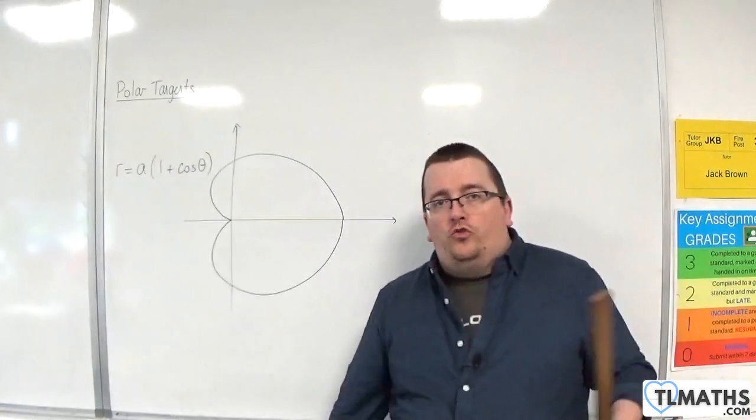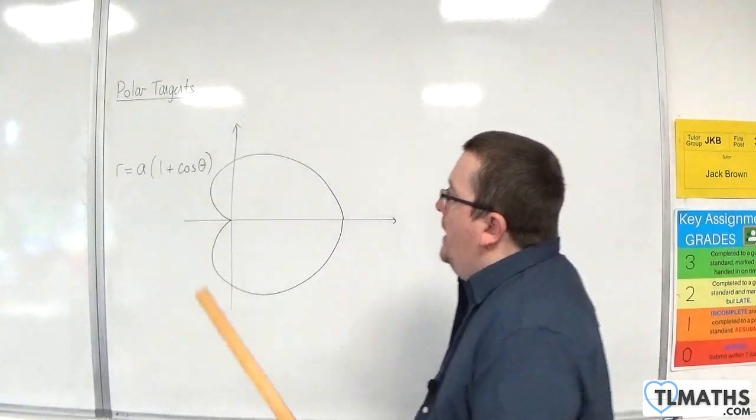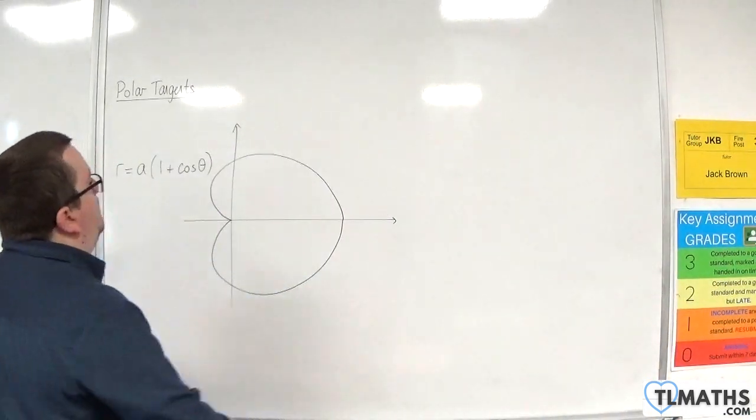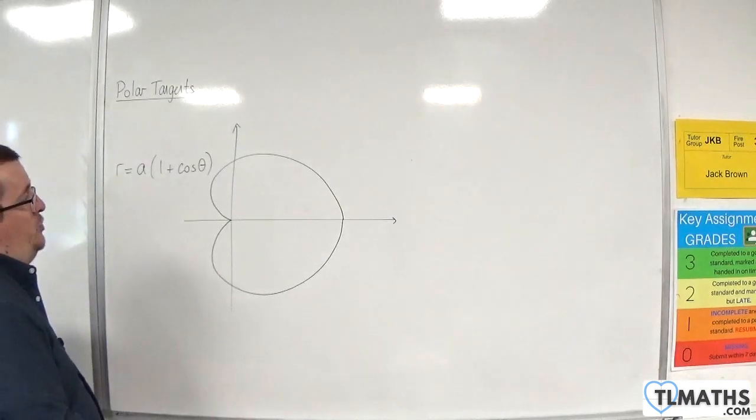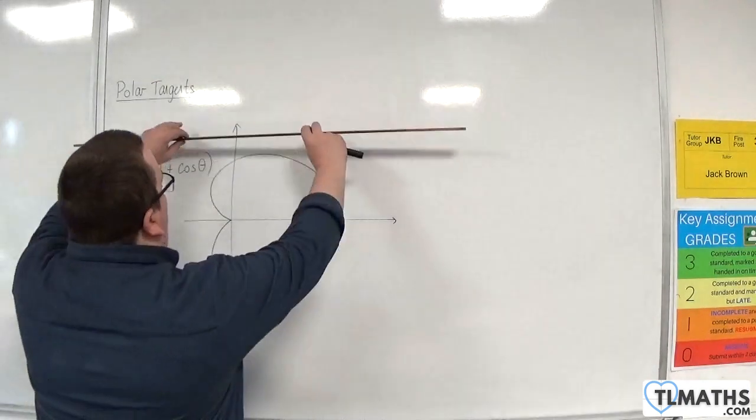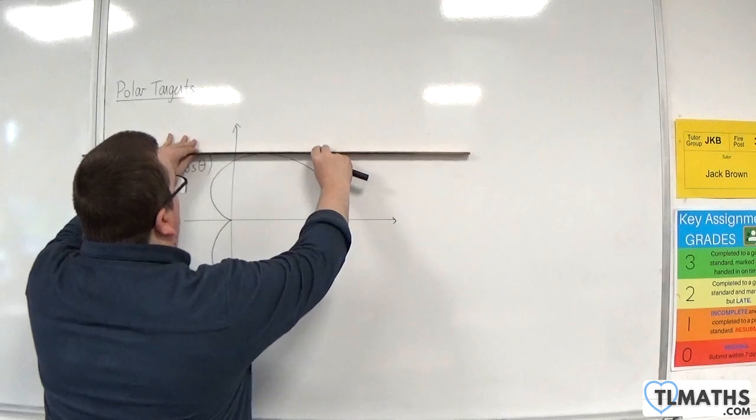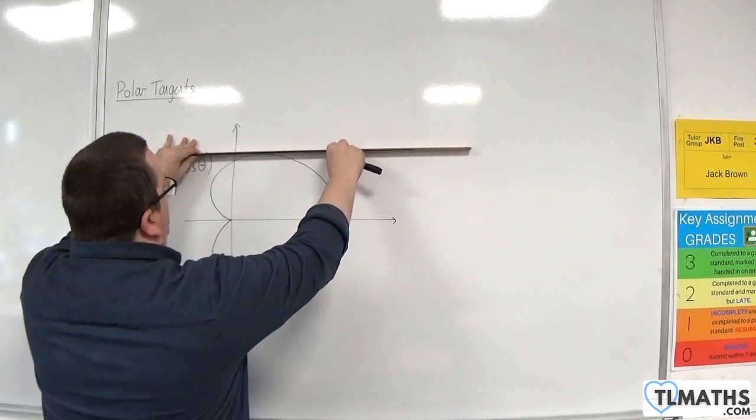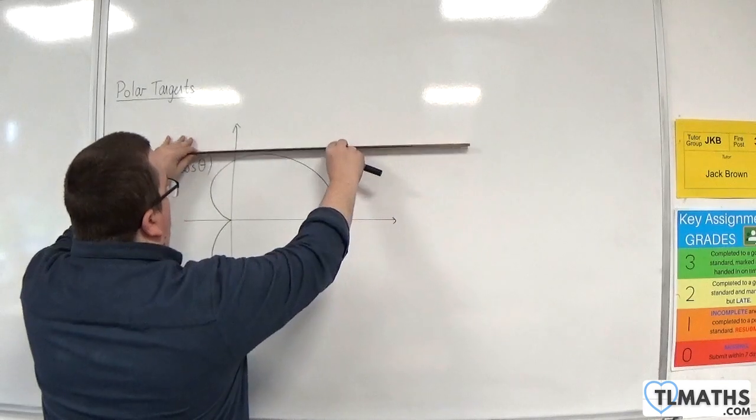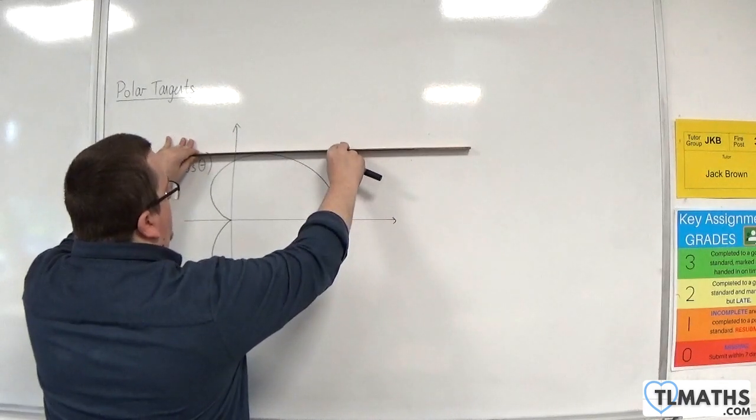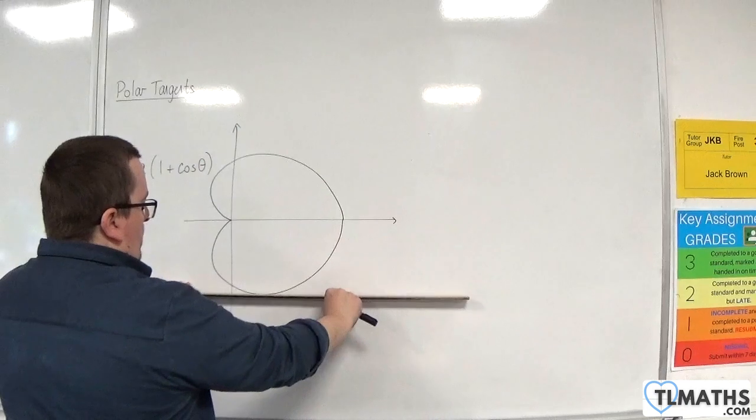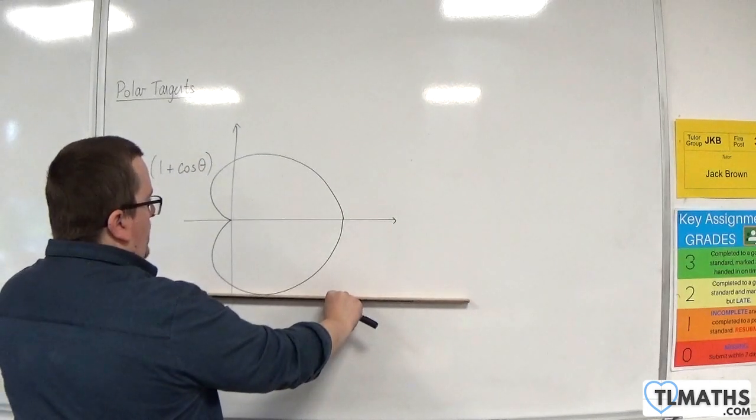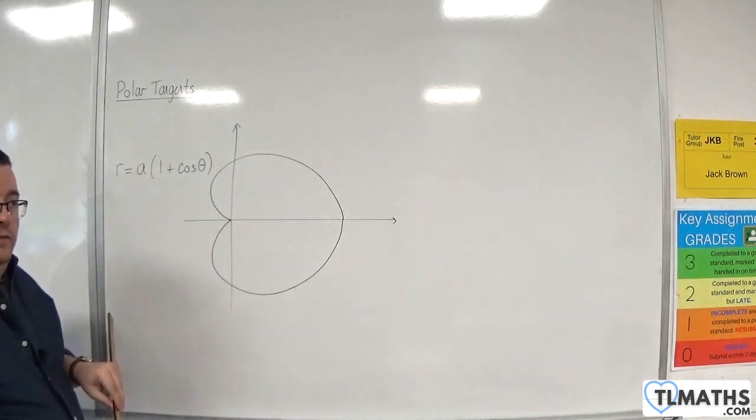And what we're going to be interested in is where the curve, or rather the equation of the tangent to the curve, where it is parallel to the initial line. So in this case, there's definitely one going to be here. You're probably thinking, there's definitely one going to be here.